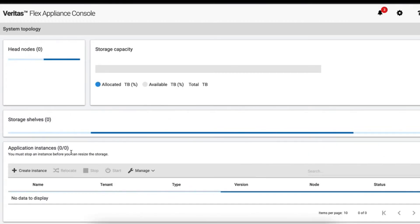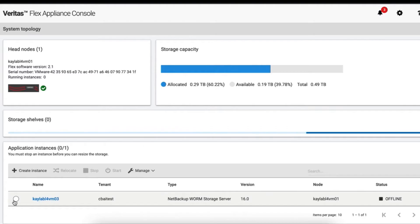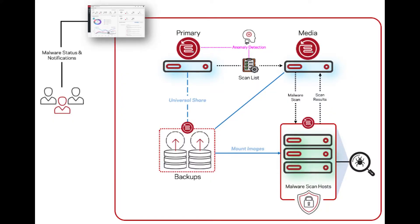Now you can see how easy it is to deploy an air-gap solution on Flex Appliance. Malware detection leverages universal shares, so you don't need to configure a specific share for scanning — it supports SMB and NFS. The MSDP host exposes the image to the scan host as a read-only share, which means there is no additional risk reading a potentially infected image. As an image passes through its storage lifecycle policy, you can scan images once they reside on a WORM storage server without interrupting the second SLP operation.